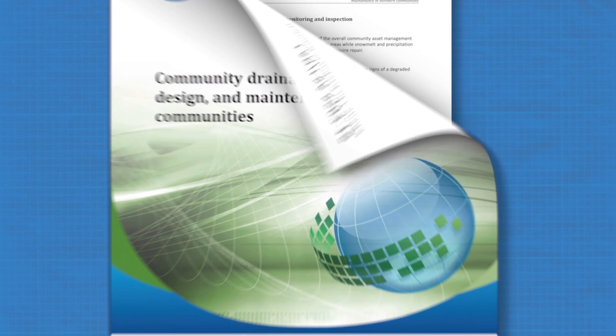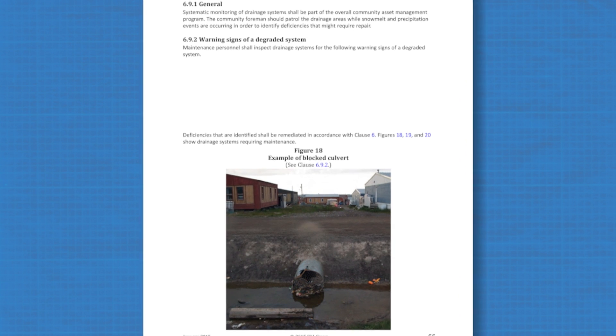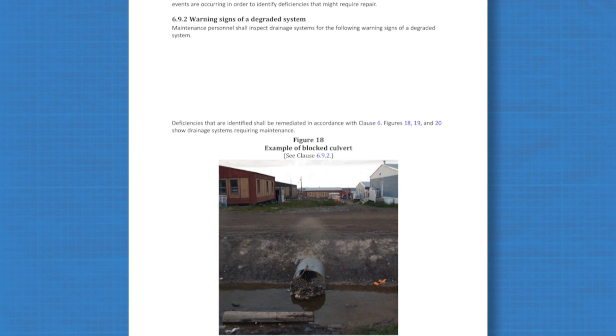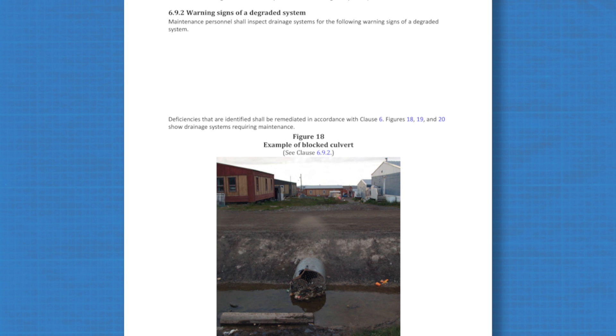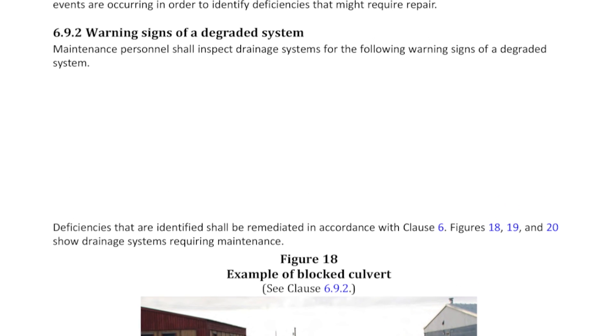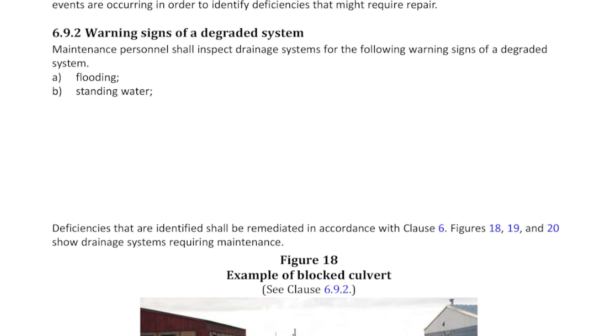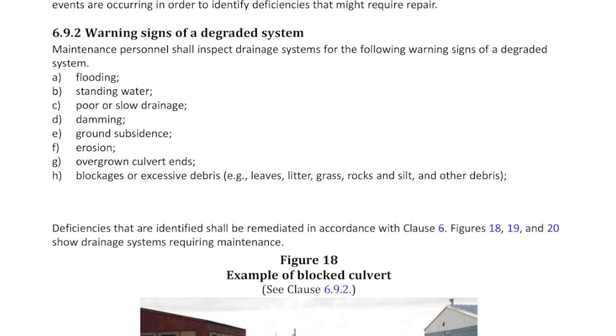Maintenance is the key to success in northern drainage systems and monitoring is the best way to stay ahead of the game. No matter what time of year, here are things to always watch for. Flooding. Standing water. Poor or slow drainage. Damming. Ground subsidence, where the ground is suddenly lower than it should be. Erosion. Overgrown culvert ends. Blockages or excessive debris like leaves, litter, grass, rocks and silt. Excessive vegetation that slows down or blocks water flow.